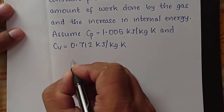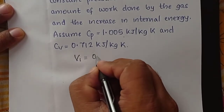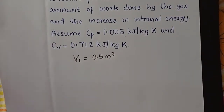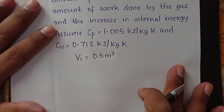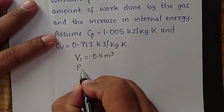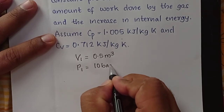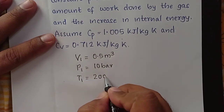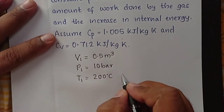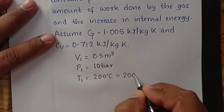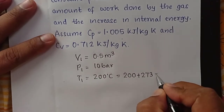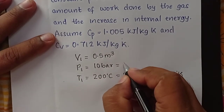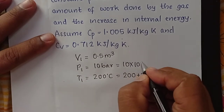Let us write the given values. V1 is equal to 0.5 meter cube. P1 is equal to 10 bar. T1 is equal to 200 degree centigrade, which we convert to kelvin: 200 plus 273 gives 473 kelvin. Also convert pressure from bar to newton per meter square: 10 into 10 to the power 5 newton per meter square.